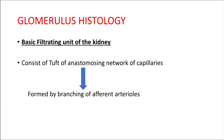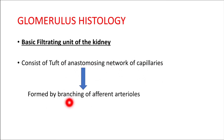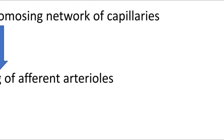The glomerulus is the basic filtering unit of the kidney. Blood from the whole body gets filtered in the glomerulus. The glomerulus consists of tufts of an anastomosing network of capillaries, formed by the branching of afferent arterioles, which are a branch of the renal artery. So the glomerulus is mainly made up of capillaries.